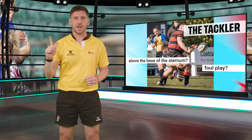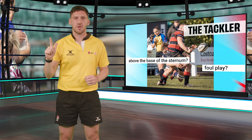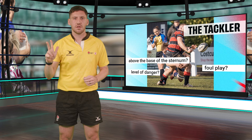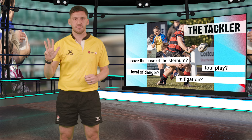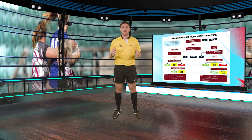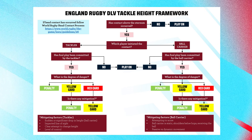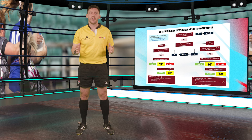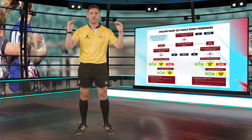The sanction we deliver is based on four questions: Was there contact above the base of the sternum? Was it foul play? What was the level of danger? And was there mitigation? On screen, you'll see our domestic law variation decision-making framework. It might look a little bit complicated, but all it involves is considering those four questions and using the evidence to make your decision.